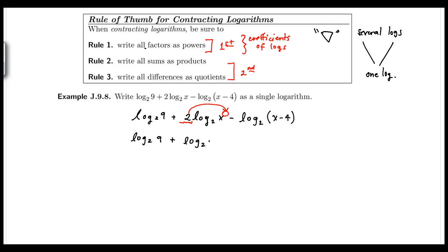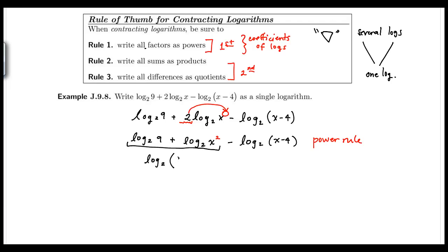Using the power rule, we rewrite this as: log base 2 of 9 plus log base 2 of x squared minus log base 2 of (x minus 4). Now, since we've applied power rule and all factors are written as powers, we can write sums as products. The first two terms are a sum of two logs with the same base, so using the product rule we rewrite them as log base 2 of (9 times x squared), minus log base 2 of (x minus 4).